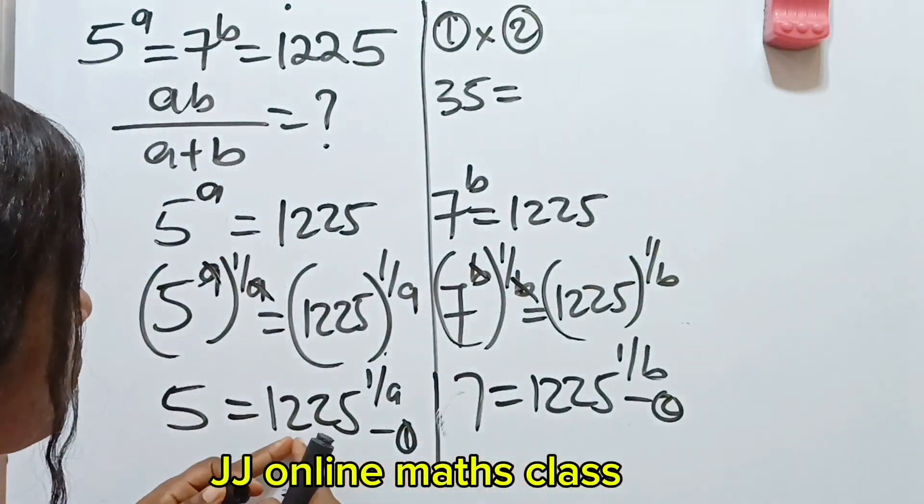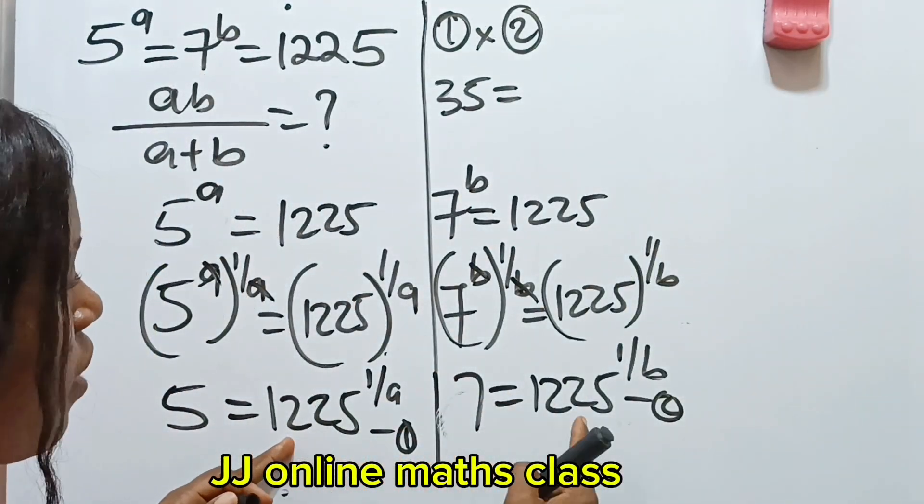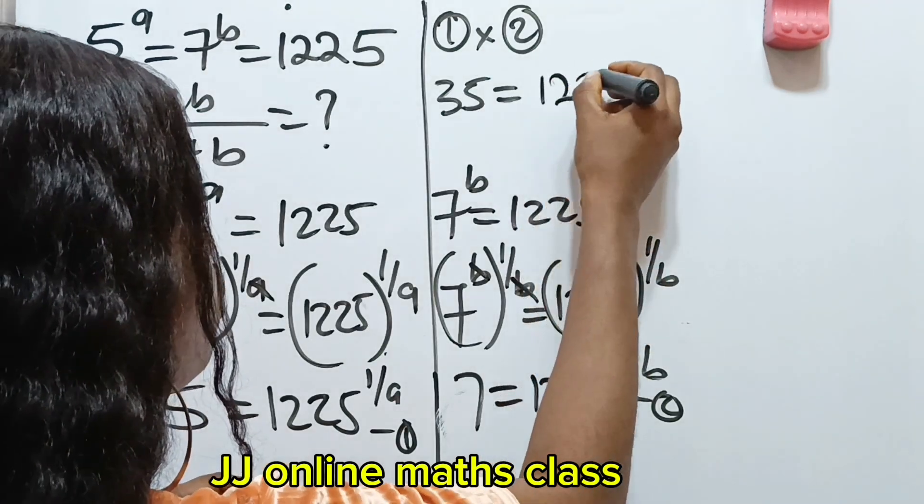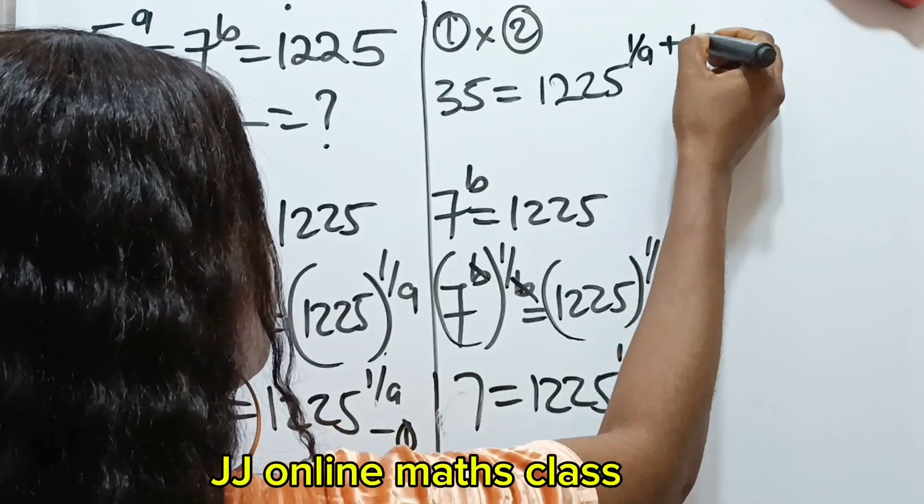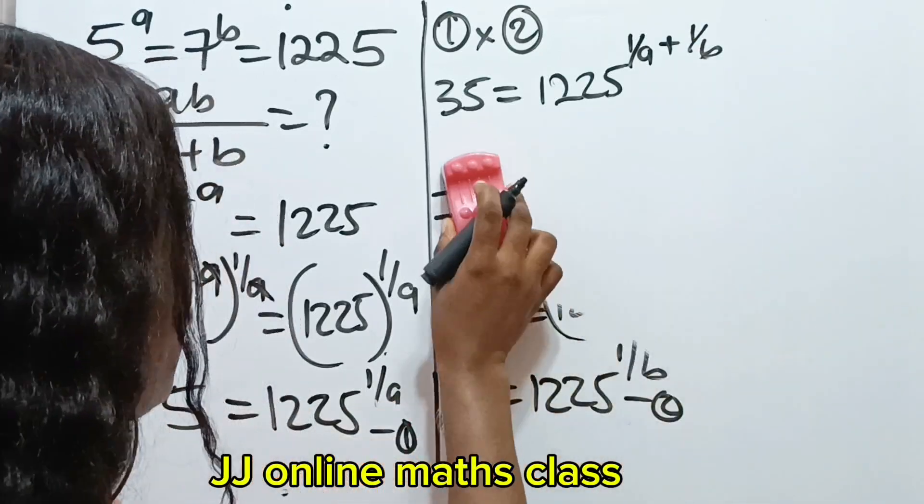So in that case, I am going to pick one base, which is 1225, right? 1225, and we are going to add the powers. That is 1 over a plus 1 over b.